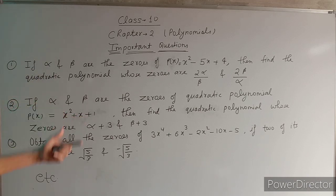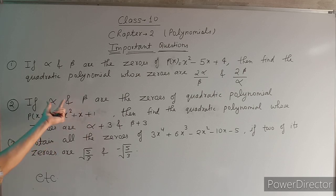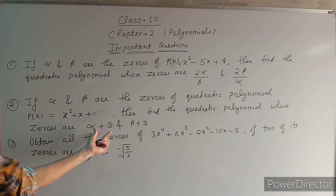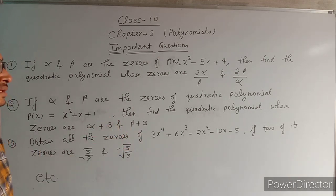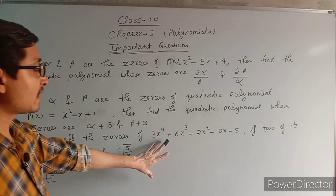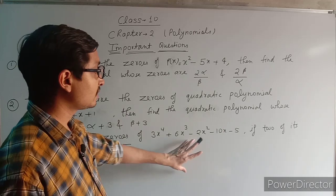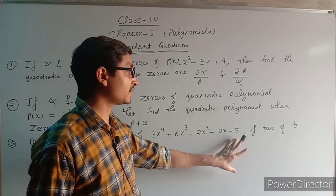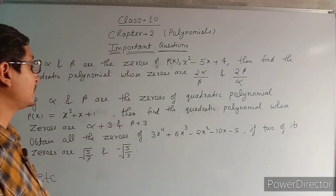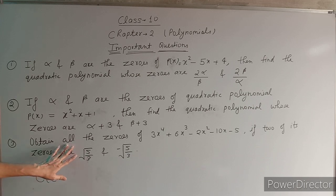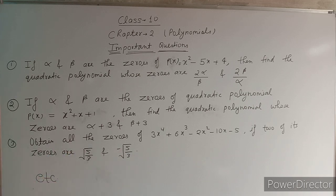Similarly, the second question involves a quadratic polynomial whose zeros are alpha+3 and beta+3. The third type of question: a biquadratic equation 3x⁴ + 6x³ - 2x² - 10x - 5 is given, and we have to find all the zeros if two of the zeros are √(5/3) and -√(5/3).